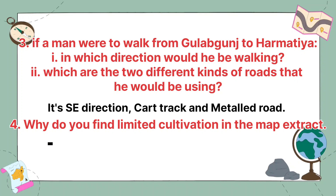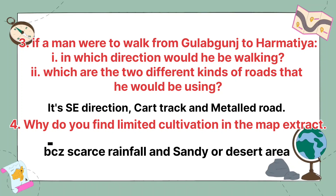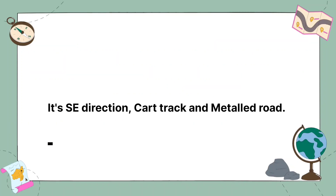Why do you find limited cultivation in the map extract? It is because of scarce rainfall, or it is a sandy or desert area.